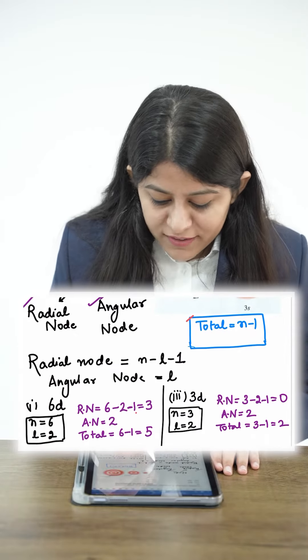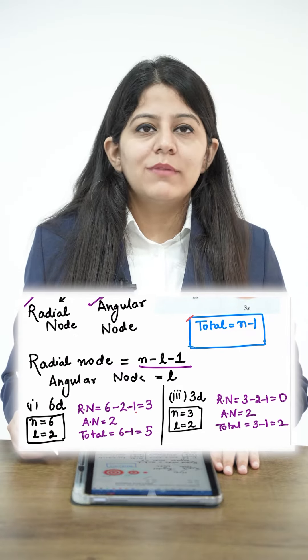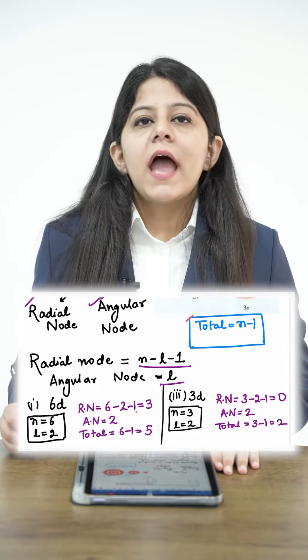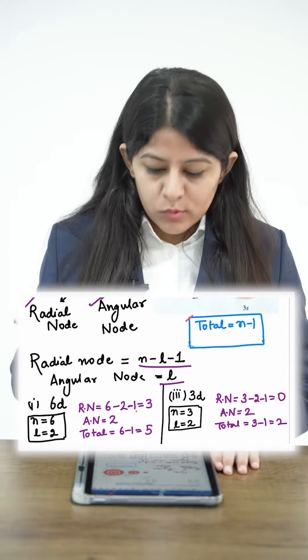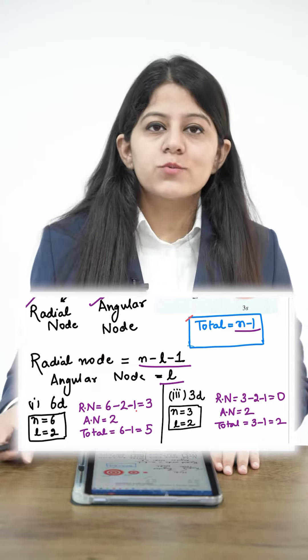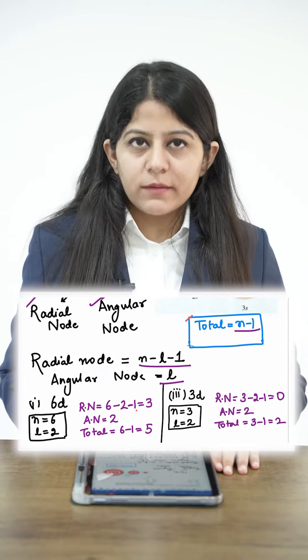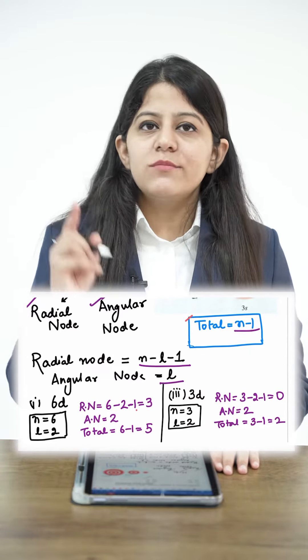Radial nodes can be found using this formula: N minus L minus 1, and angular nodes is simply L. And total nodes by adding both of these, that is N minus 1, where N is the principal quantum number and L is the azimuthal quantum number.